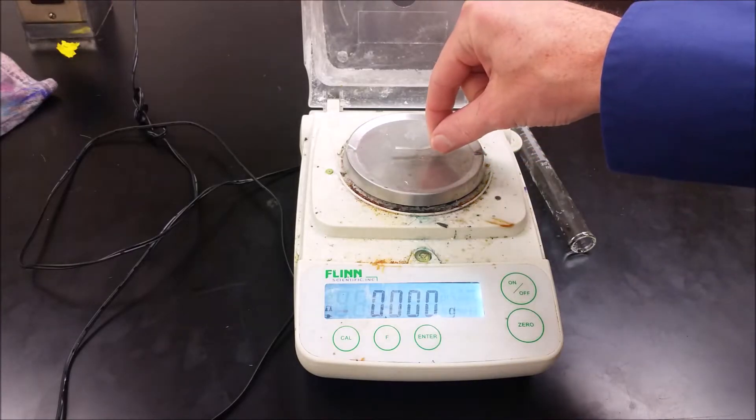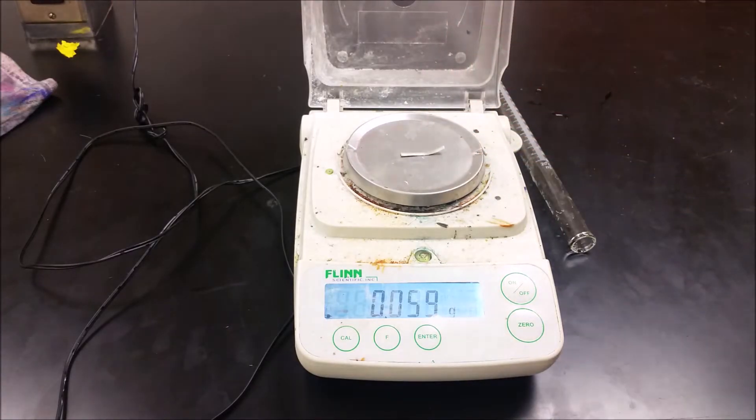The first thing you do in the experiment is measure the mass of the magnesium strip. There's an alternate way to do this that gives you more significant figures that's in the description, but for this particular experiment we're really not going for intense precision anyways.